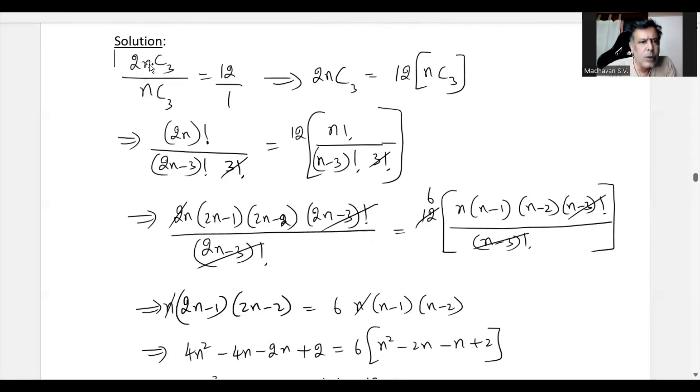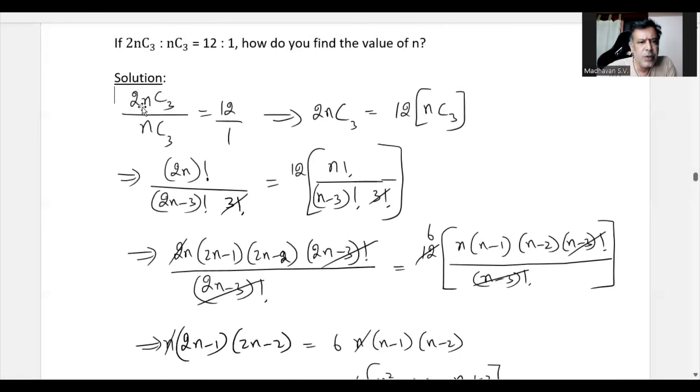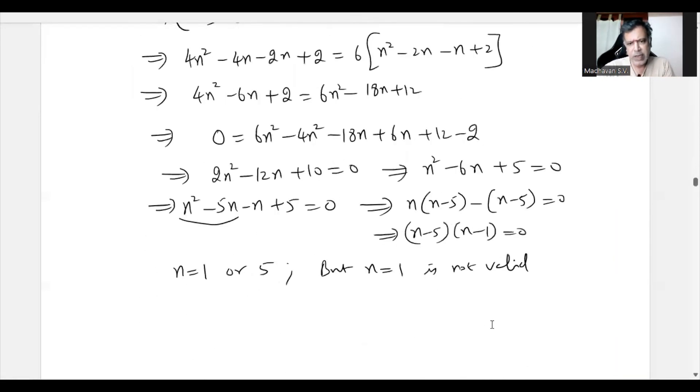Again, here also 2 times 1 is 2, 2C3 is not a valid combination because N, that is this number, should be always larger than or equal to this number. So N equal to 1 is not valid, therefore N equal to 5, that is the solution for this particular problem.